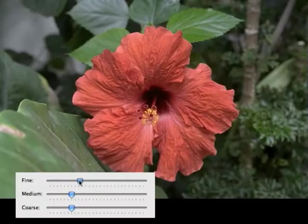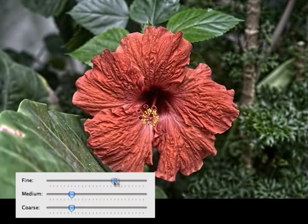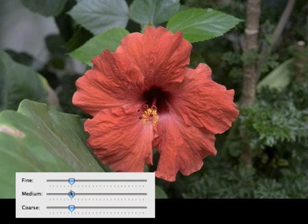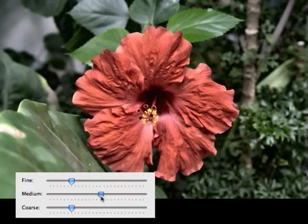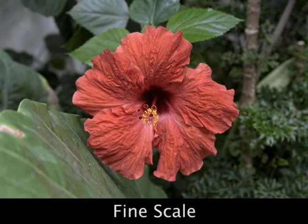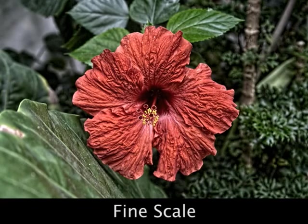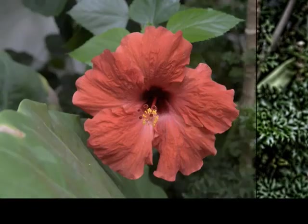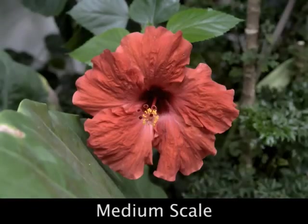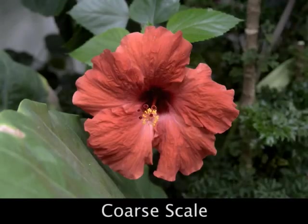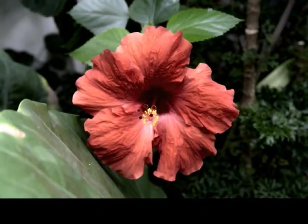We have implemented a simple tool for manipulating local contrasts at different scales based on our multiscale decomposition. Once the decomposition has been computed, the different detail layers can be manipulated at interactive rates. Note that the manipulation range is very wide — it takes an extreme manipulation to cause artifacts to appear. Manipulating the medium detail layer can add depth to the image, while coarse detail manipulation is closer to a global contrast adjustment.